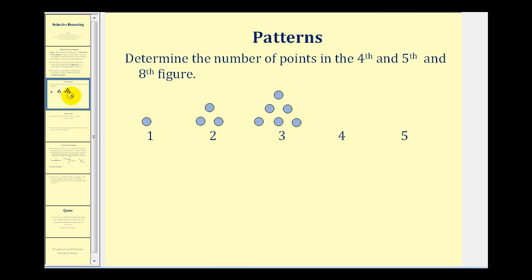Let's take a look at some problems. Here we want to determine the number of points in the fourth and fifth and eighth figure if this pattern continues. So looking at figure one, two, and three, we want to use inductive reasoning to figure out a possible pattern. By analyzing the first three figures, we should be able to determine that the bottom row of the fourth figure is going to have four points.